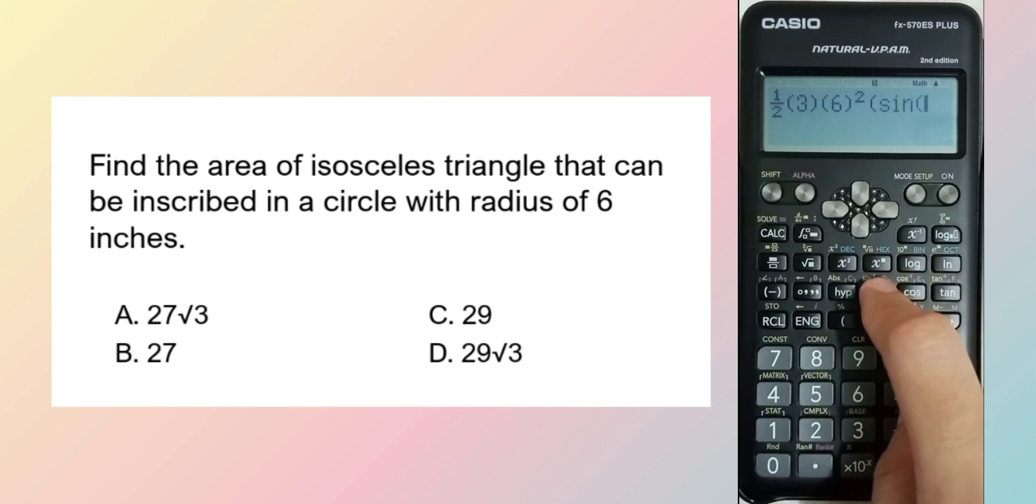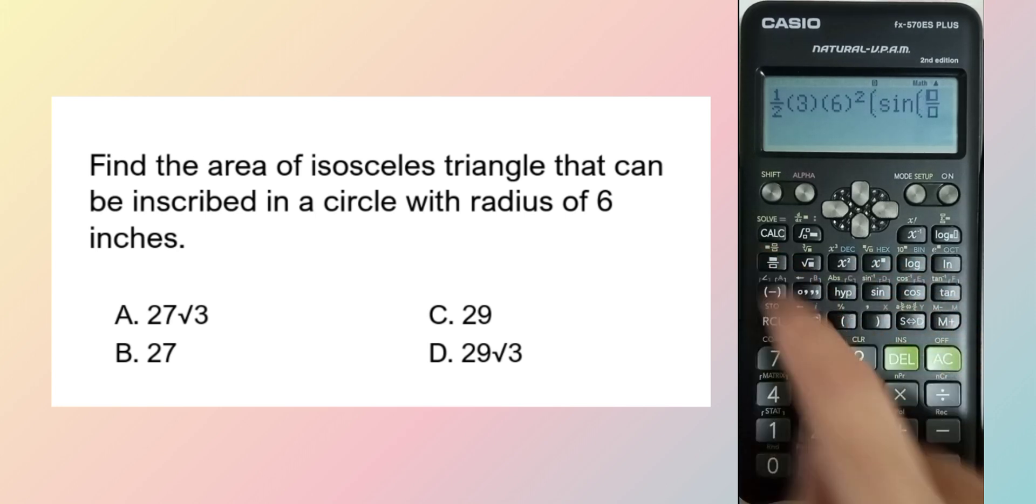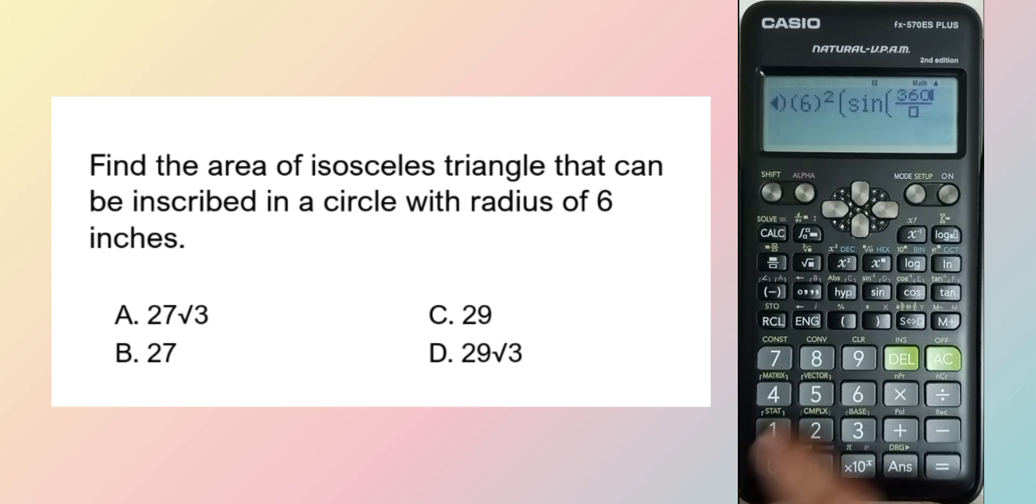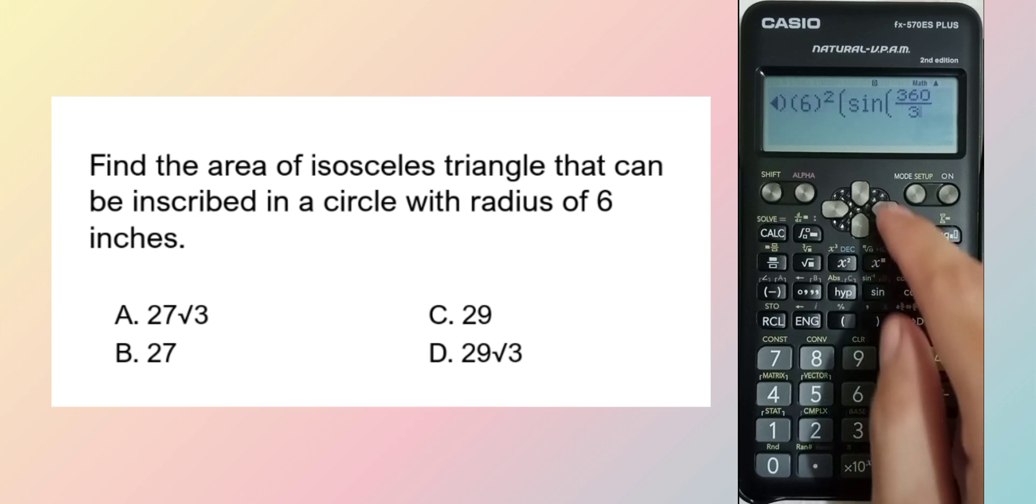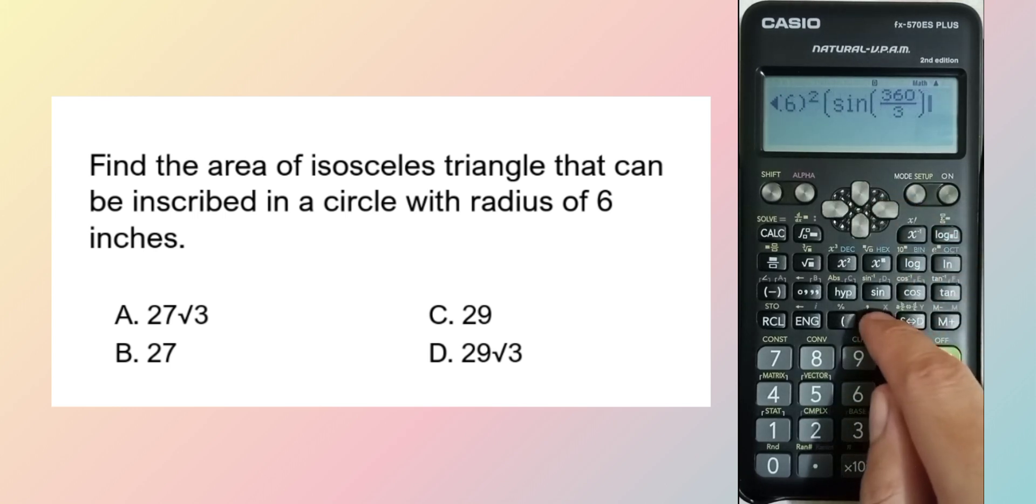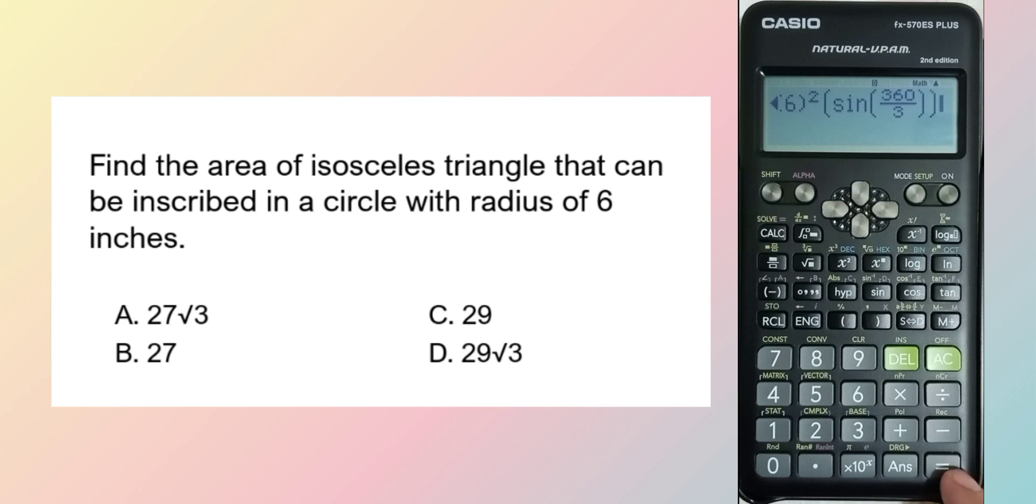Then sine of 360 over n (the number of sides, and for this 3 since it is a triangle, or isosceles triangle rather). This gives 27 square root of 3, just the same.